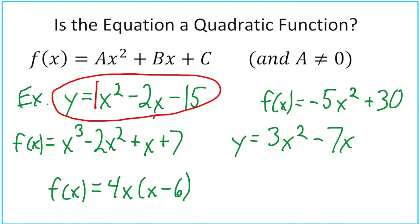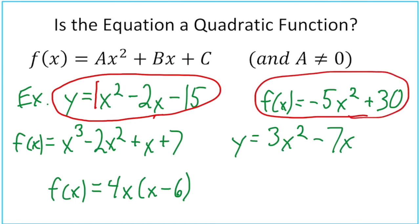Second one — and by the way, notice y is sometimes used instead of f(x); either way works. Next up: f(x) = -5x² + 30. It's missing a b value, but technically the b value simply equals zero. So that is a quadratic.